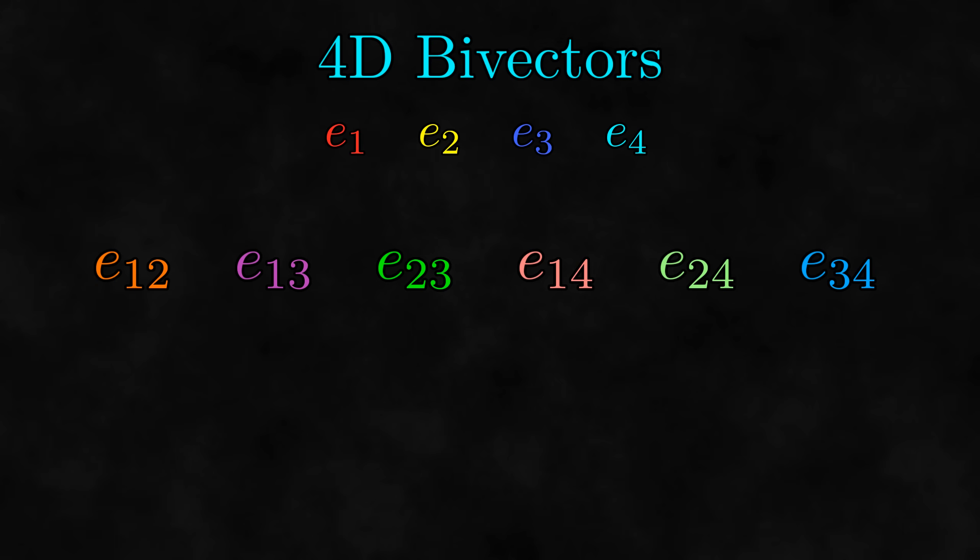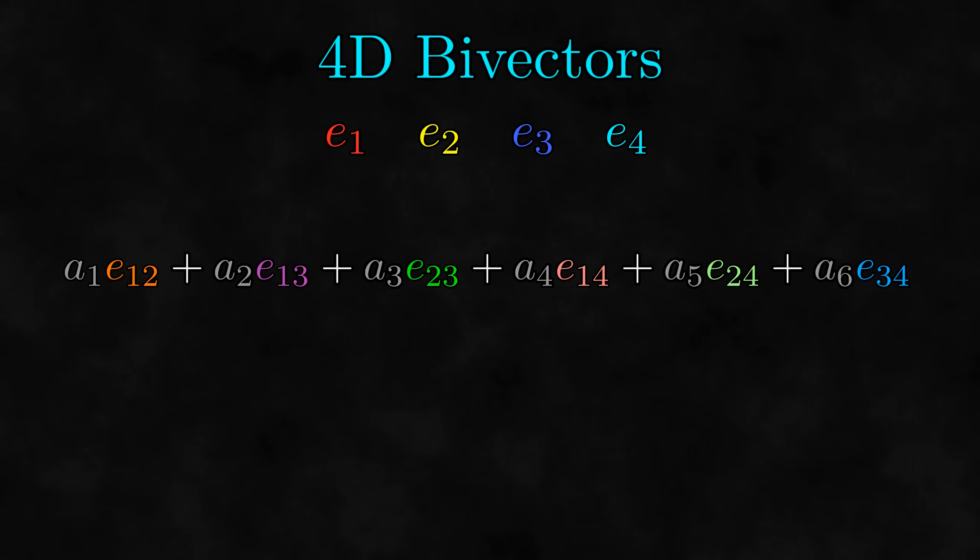We can describe 4D bivectors using the algebraically six-dimensional space spanned by these six basis bivectors. So you may be wondering, why did I say that everything we knew about bivectors will come crashing down? The answer is addition.